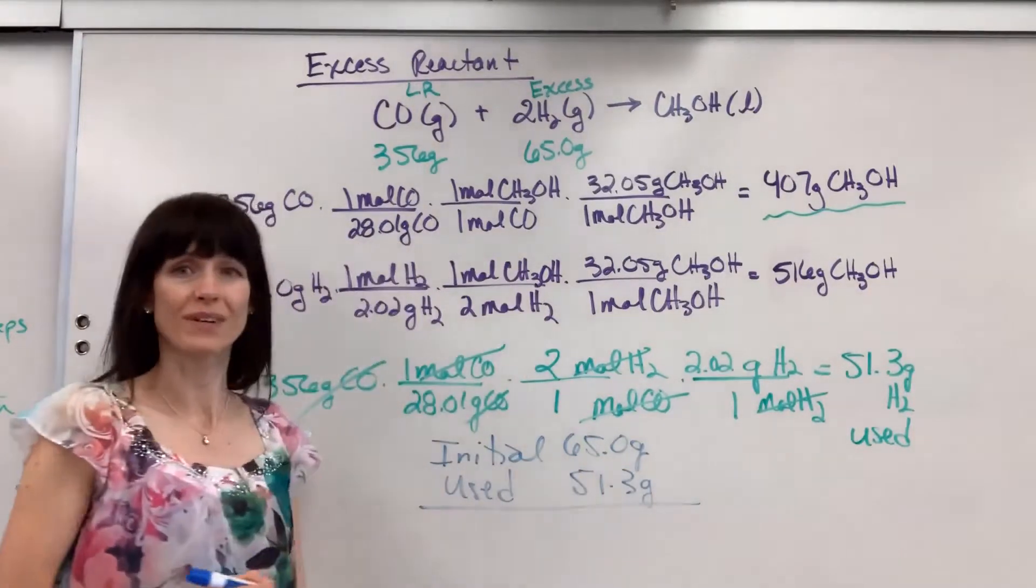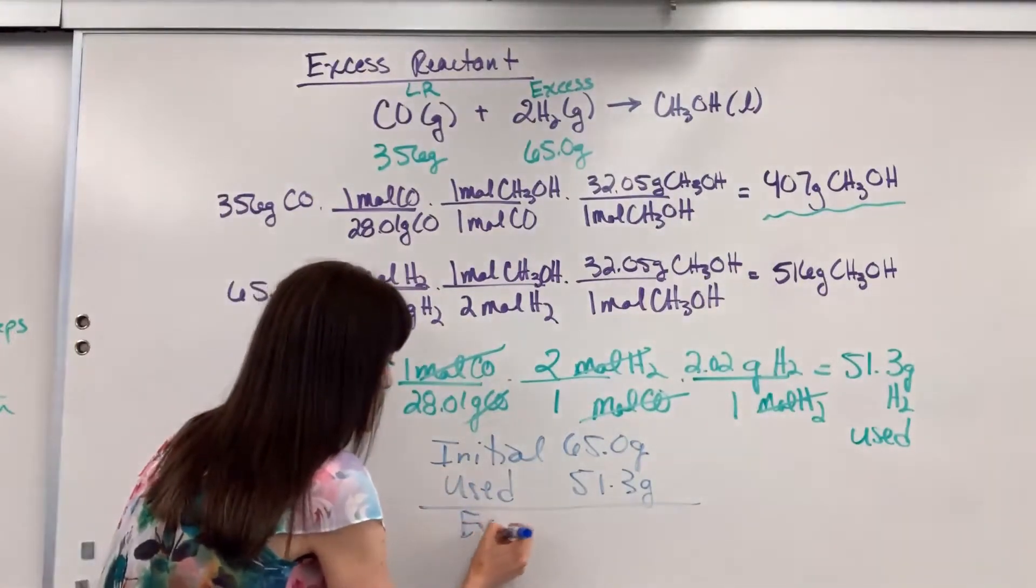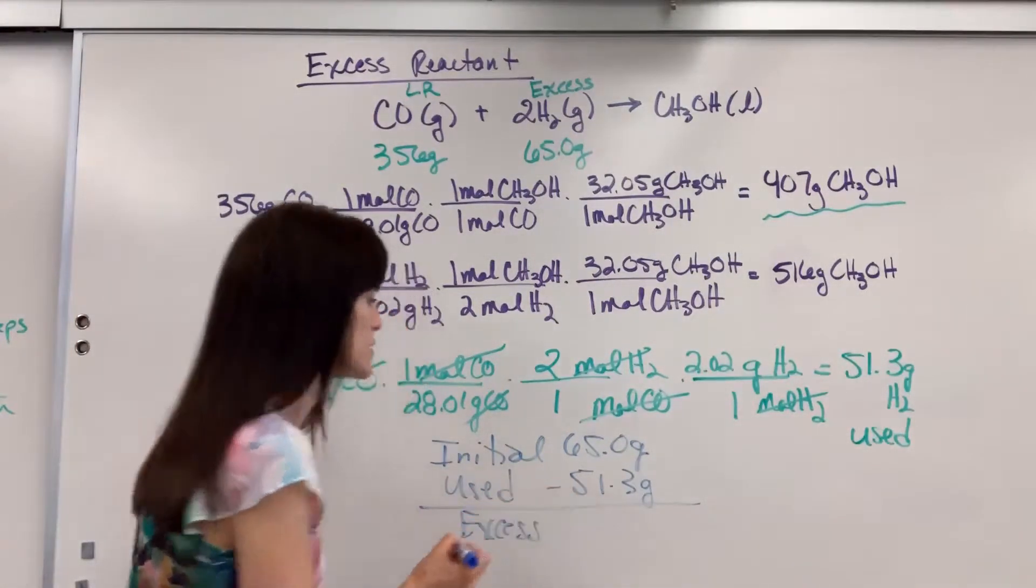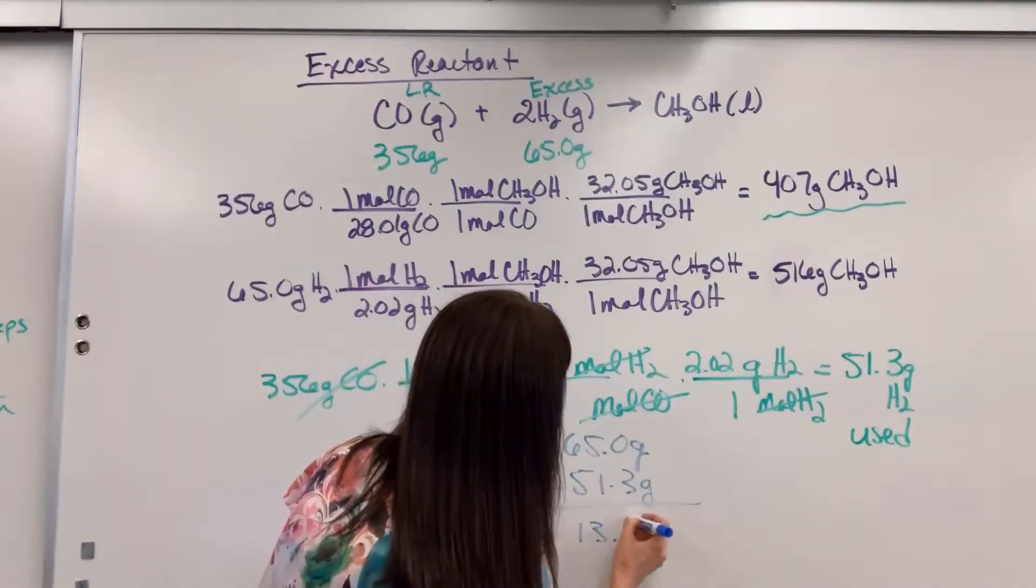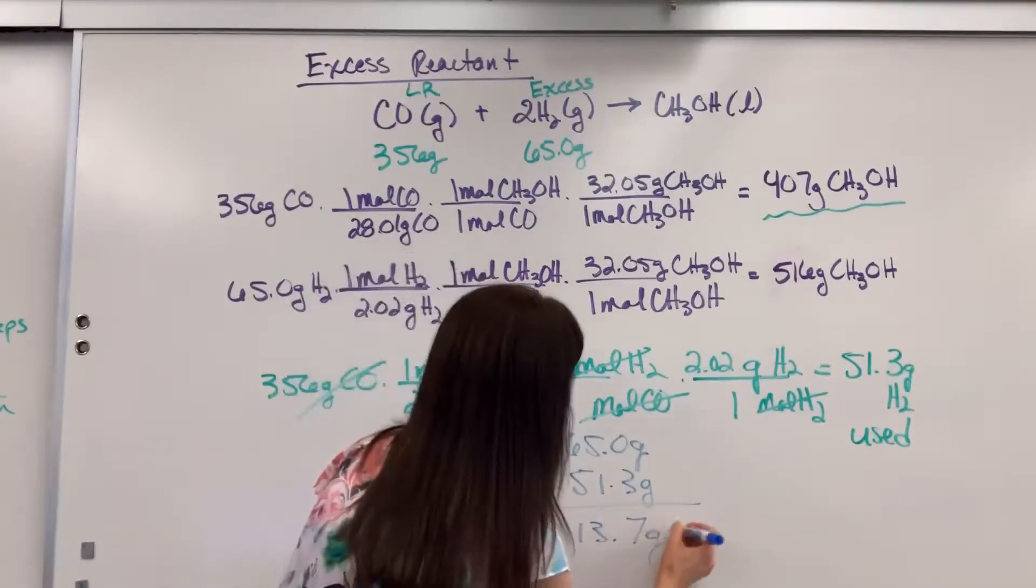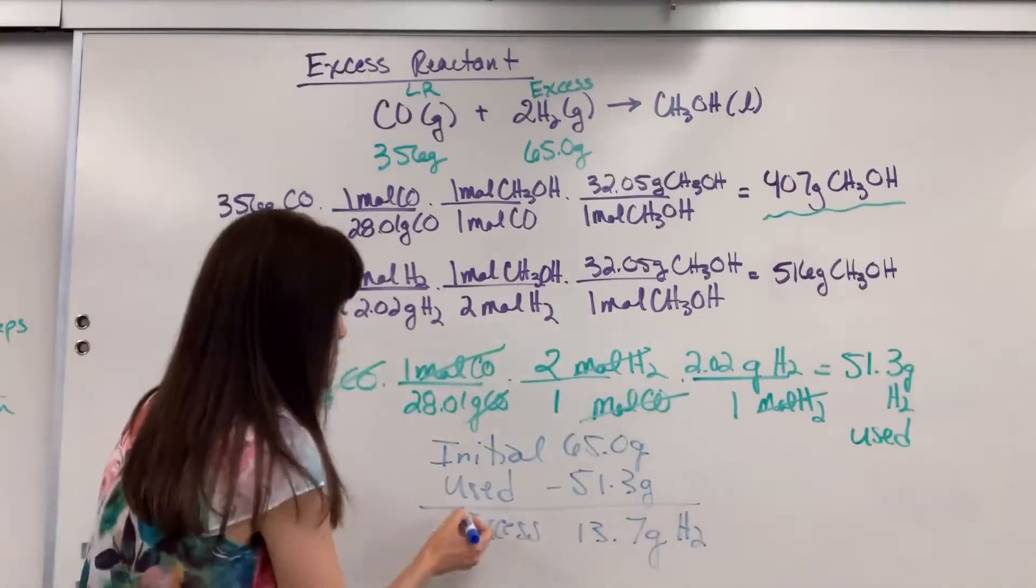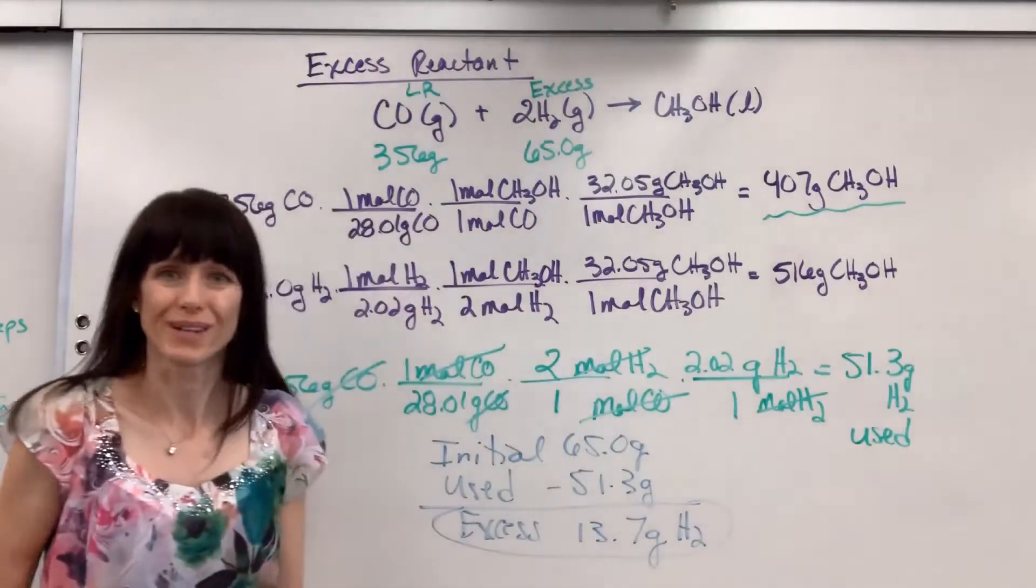And that will give you the excess amount. So if we subtract this, we are going to have 13.7 grams of hydrogen in excess. There you have it.